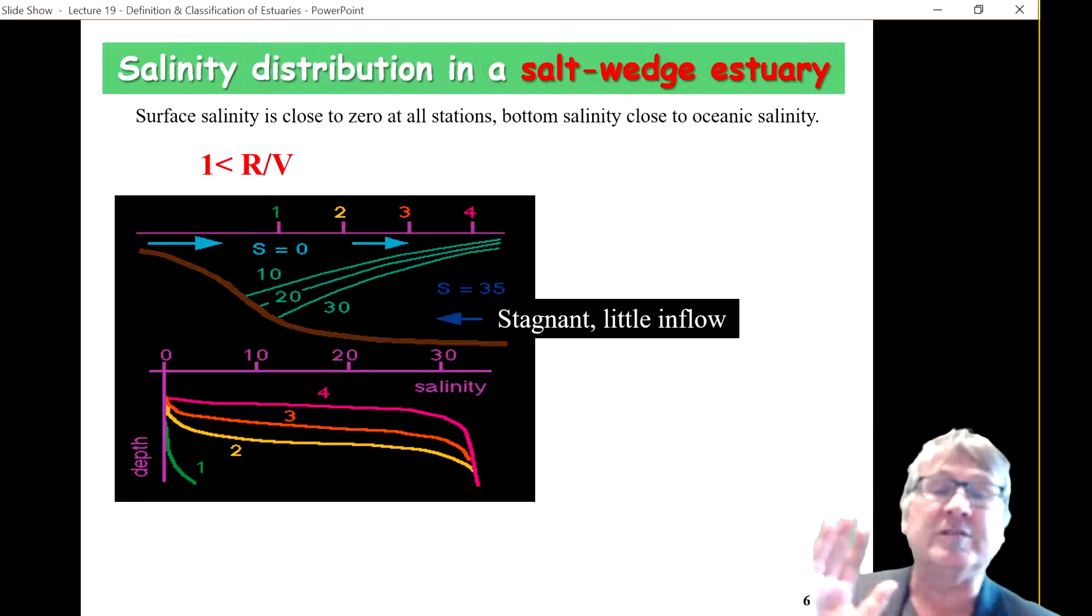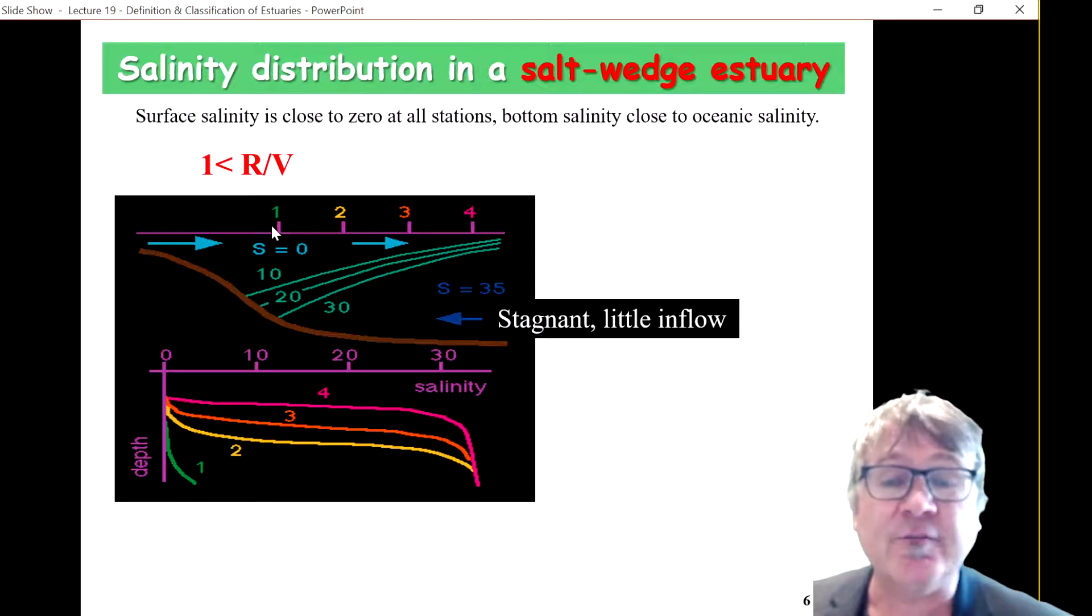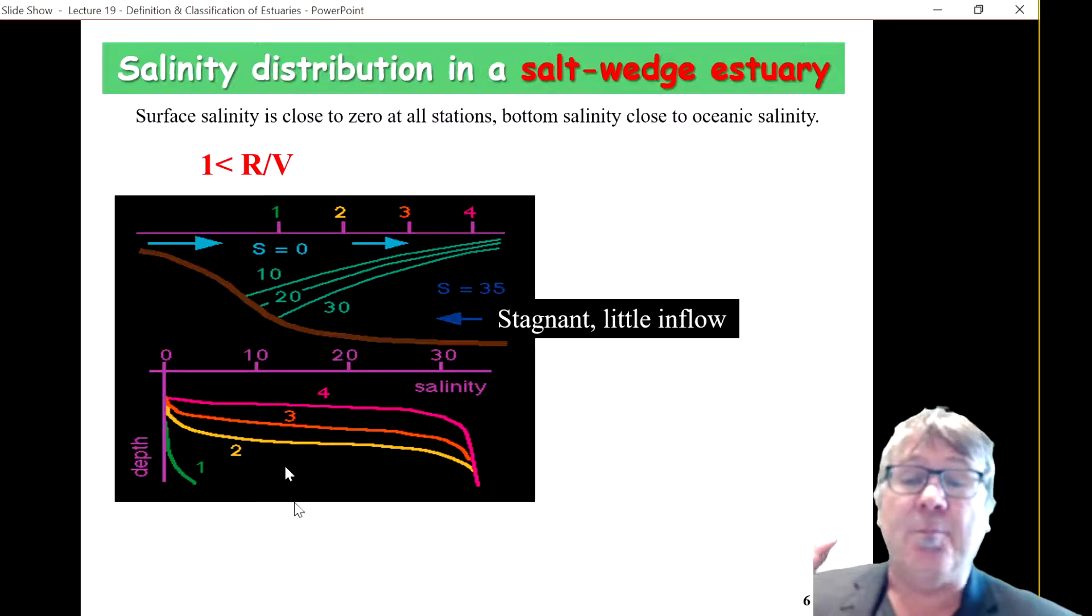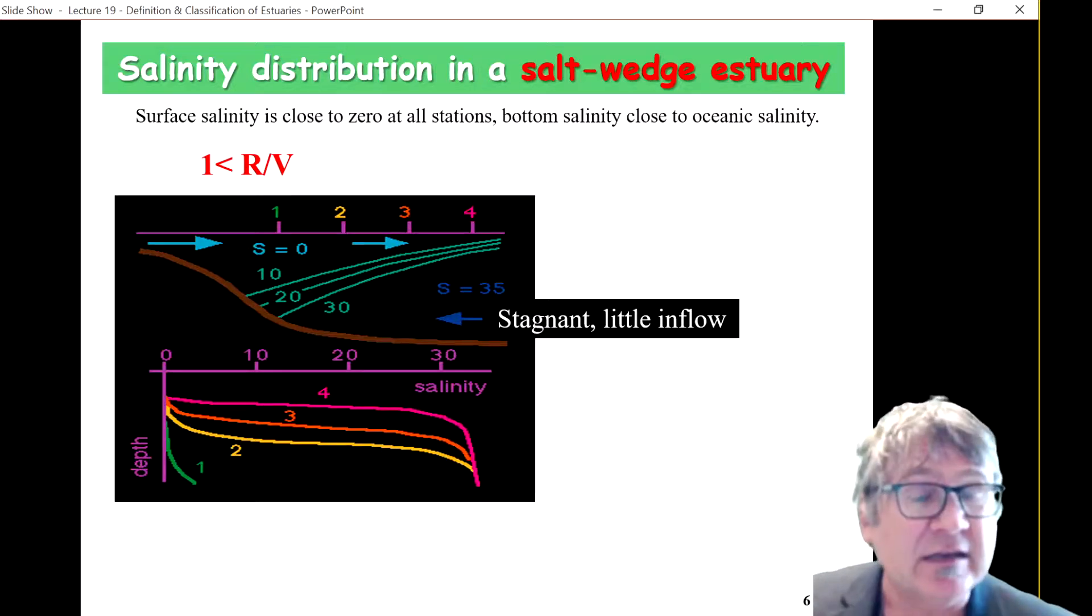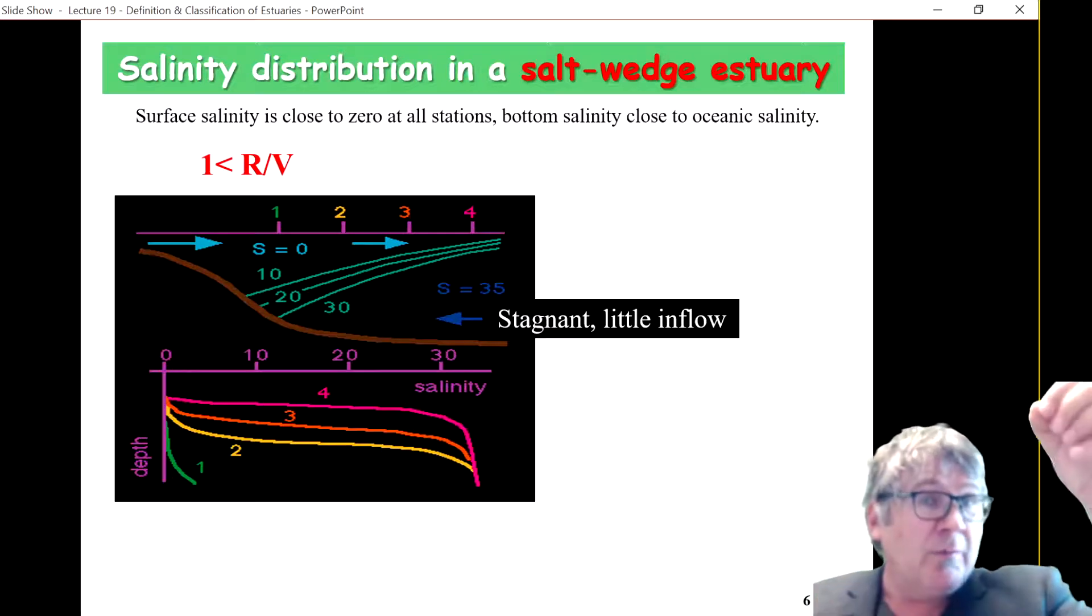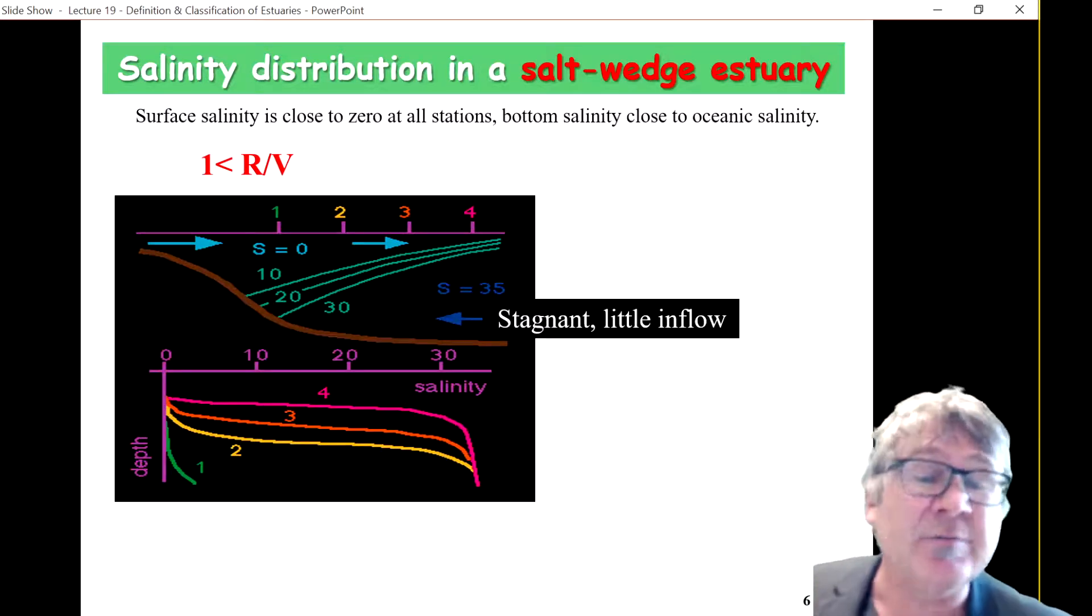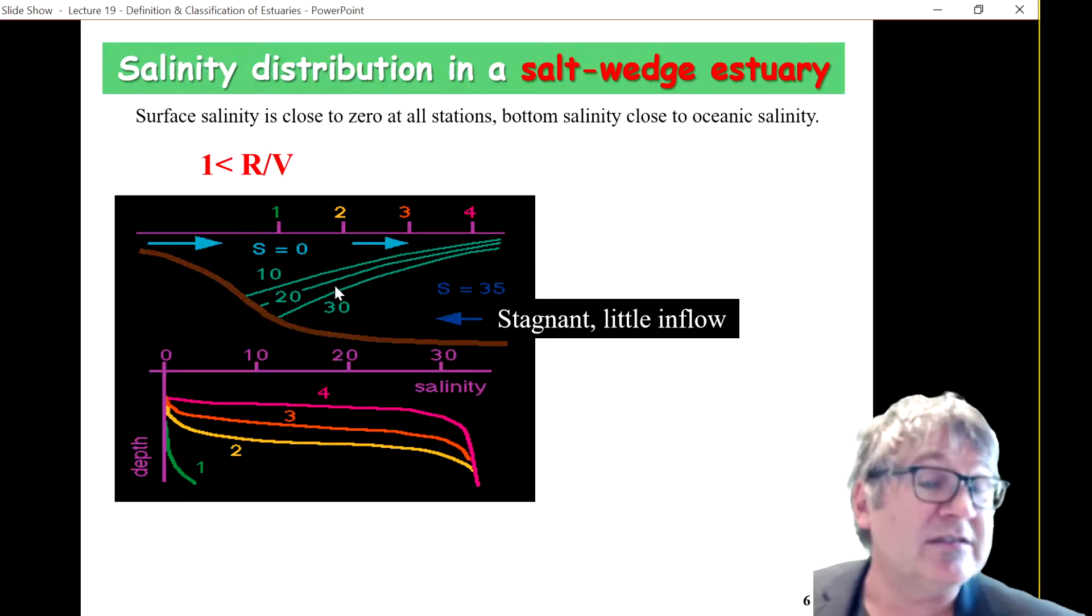So, now, what's also shown in this little sketch are stations one, two, three, four, and the bottom graph shows you how the salinity, vertical salinity structure looks like if you put in a CTD and measured the salinity. For example, at station two.